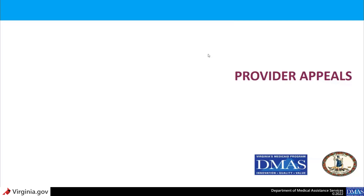Welcome to the third module of the Appeals Division Overview. This module will address the Provider Appeal Process. The following topics will be discussed: an overview of the Provider Appeal Process, Provider Appeal Issues, Federal and State Appeal Regulations, the Informal Appeal Process, and the Formal Appeal Process.